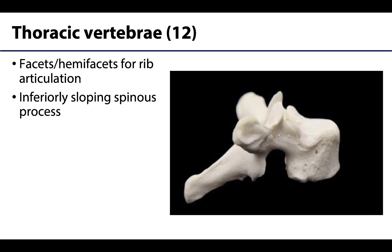Next we have the 12 thoracic vertebrae. What is truly unique about the thoracic vertebrae is that they articulate with the ribs, and they do so on both the bodies and the transverse processes. You will have these facets and hemifacets for these articulations, so if you see those you know you're looking at a thoracic vertebra. Additionally, the spinous processes are notably inferiorly projecting.